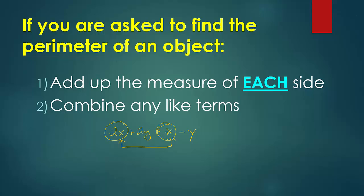So 2x. And remember, if there's nothing in front, that's a 1. So combining those two would be 3x. And then for your y's, you have a positive 2y and a negative y. And again, that's a 1 in front of the y. So if you have a positive 2 and a negative 1, and you put them together, you just have a positive y. So we'd say plus y. And that would be our simplified answer, 3x plus y.